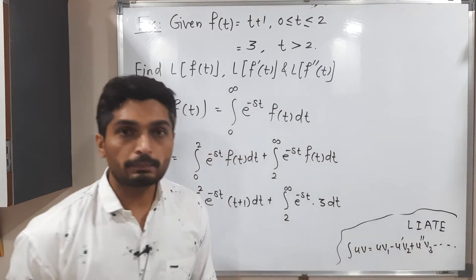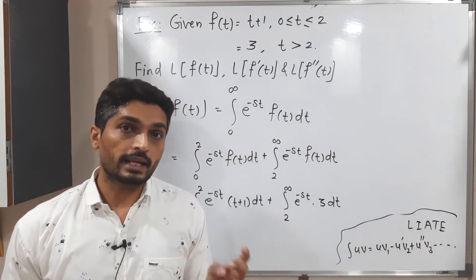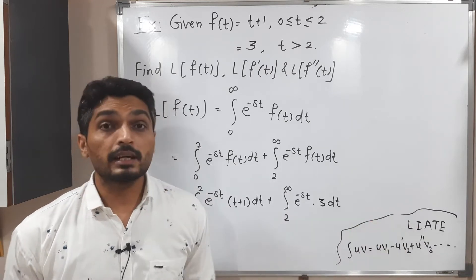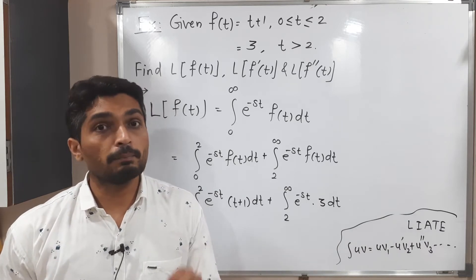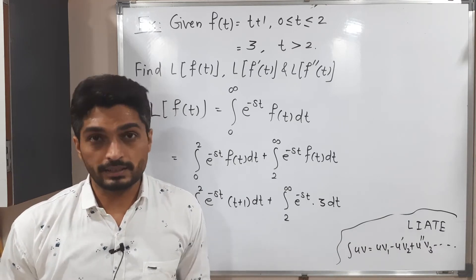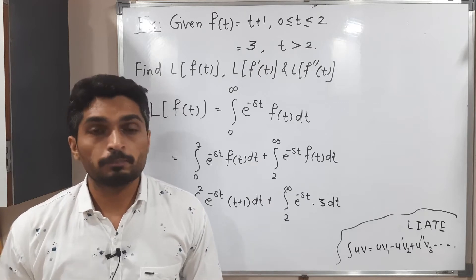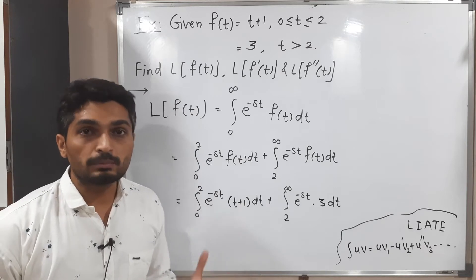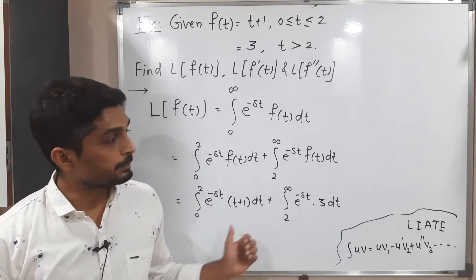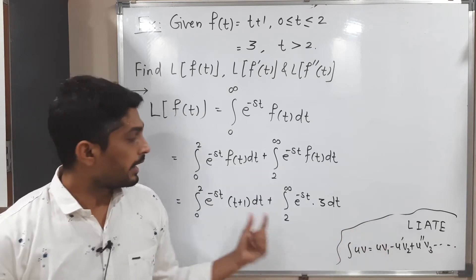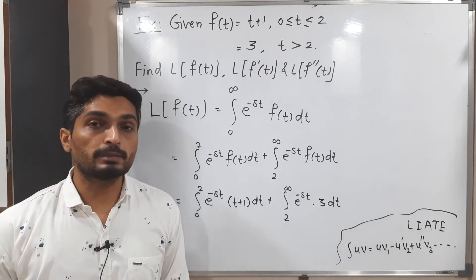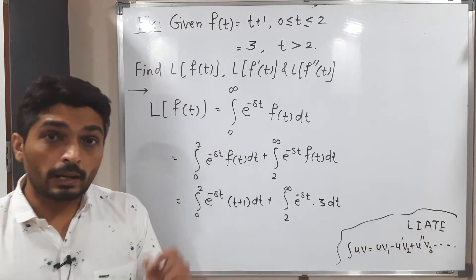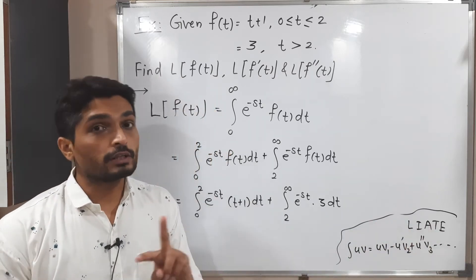LIATE stands for: L means logarithmic functions, I means inverse trigonometric functions (sine inverse, cos inverse, tan inverse, cot inverse, sec inverse, cosec inverse), A means algebraic or polynomial functions, T means trigonometric functions, and E means exponential functions. Here, e raised to minus s t is exponential (last category) and t plus 1 is a polynomial (algebraic), so A comes before E, and we should swap them.